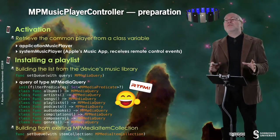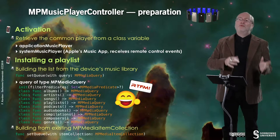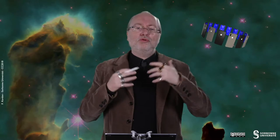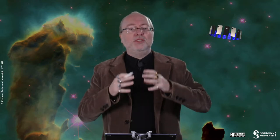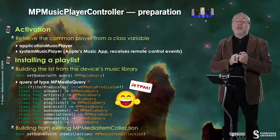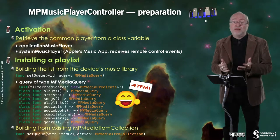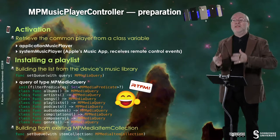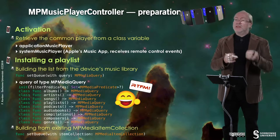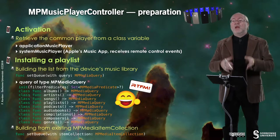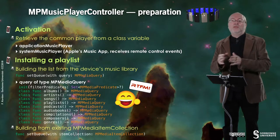Let's start with the MP Music Player Controller because you have to do a bit of preparation. To activate it, you do not create a Music Player Controller yourself. Instead, you have a common shared player that you fetch. You have two variants: the first one is the Application Music Player, which is a class attribute, and you also have a System Music Player.